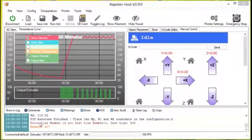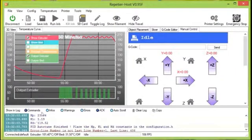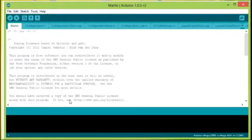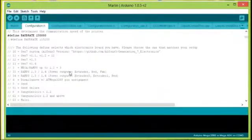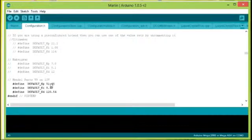Now PID auto-tuning is finished. Enter this KP, KI, and KD values into the Marlin firmware. To do this, go to Arduino IDE. Open Marlin. Go to configuration.h. Go to this line number 149 and enter new KP, KI, and KD values you got in Repetier Host.